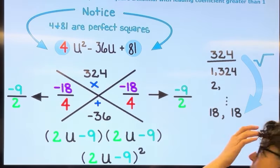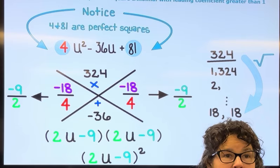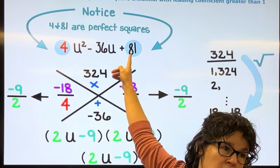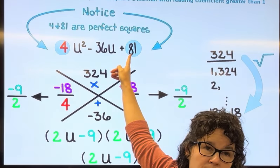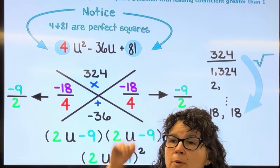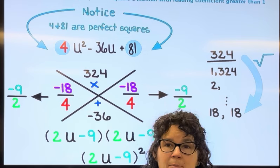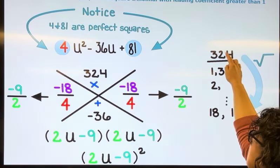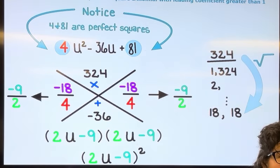The main purpose of these extra examples today is noticing that these numbers are perfect squares. If you don't notice that they're perfect squares, you're going to do the Big X method just like you've been doing. But if you notice, it's going to save you a bunch of time in listing out your pairs.